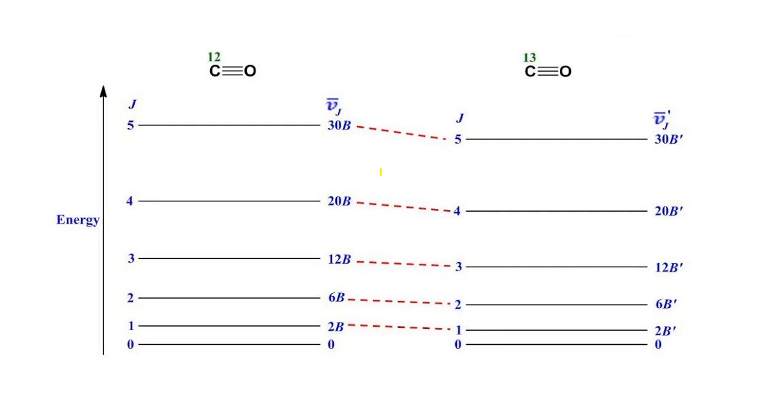Because of isotopic substitution, we get two different spectra. This is all about today's topic. I hope you understood the effect of isotopic substitution on transition frequencies in microwave spectroscopy. Thank you.